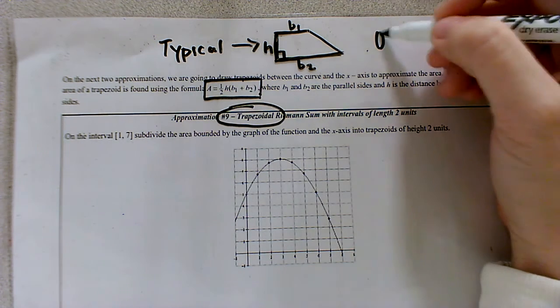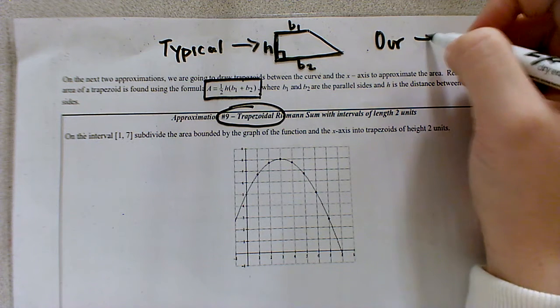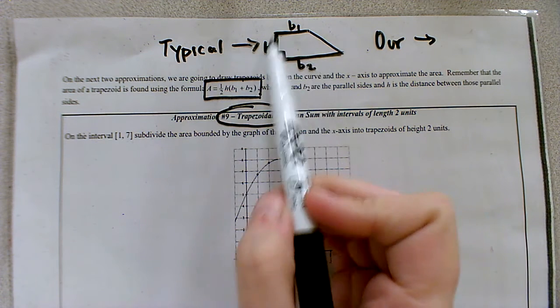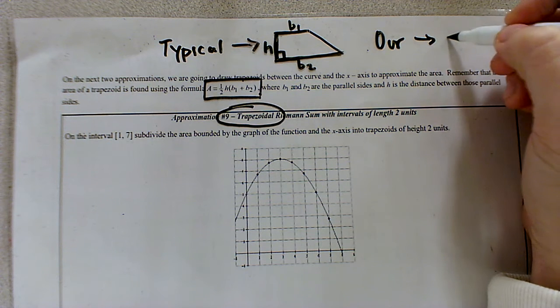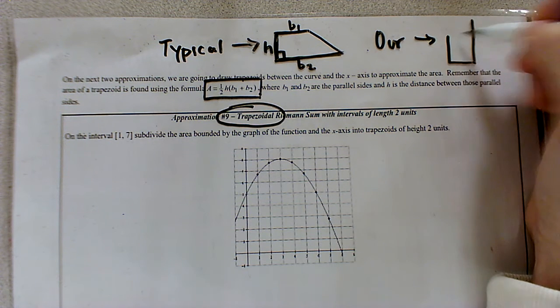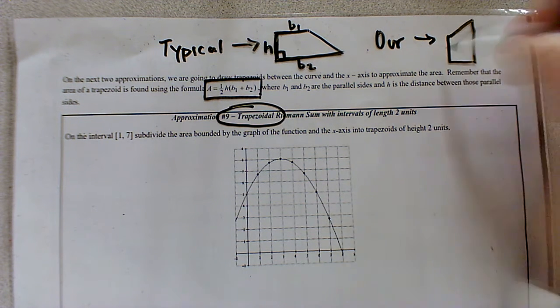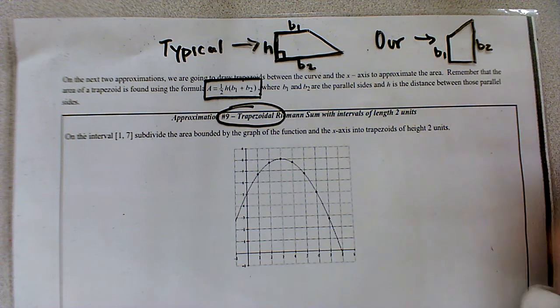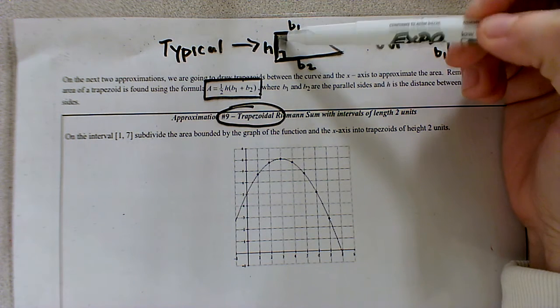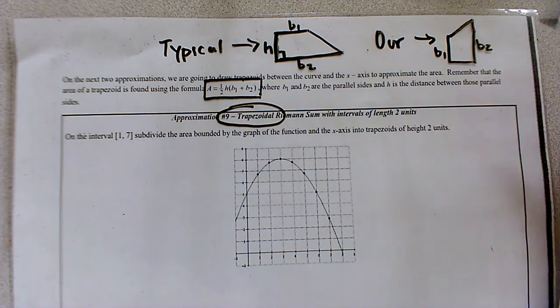Our trapezoid, however, is going to be oriented slightly different. We're going to actually take this trapezoid and rotate it counterclockwise 90 degrees. So that's going to make it look something like this. Okay, so in this case, we have base one, base two, and notice how the height, instead of being vertically oriented, it's now horizontally oriented.